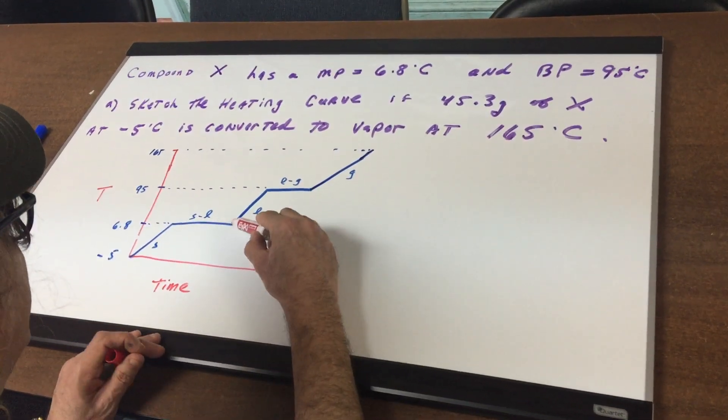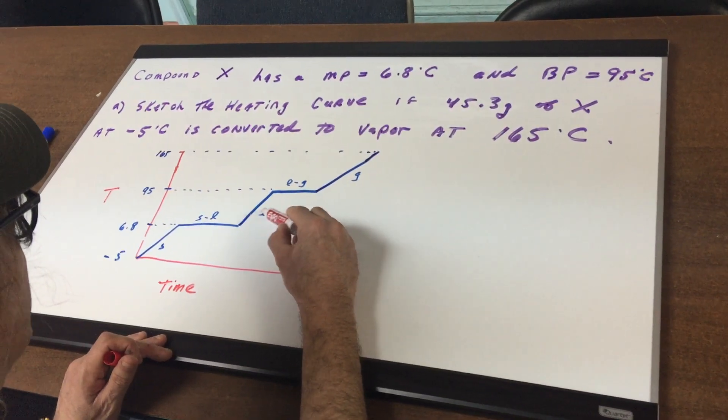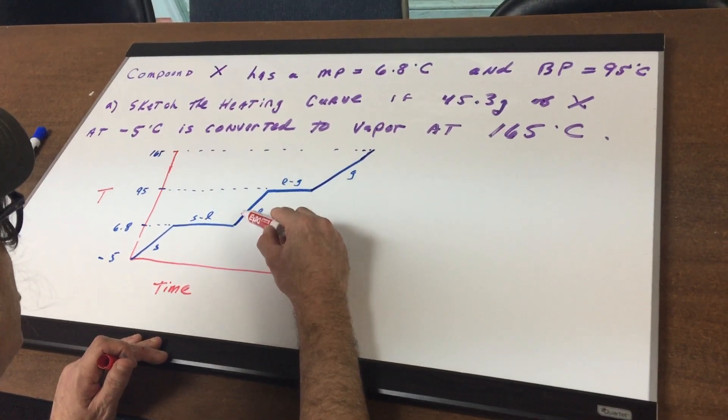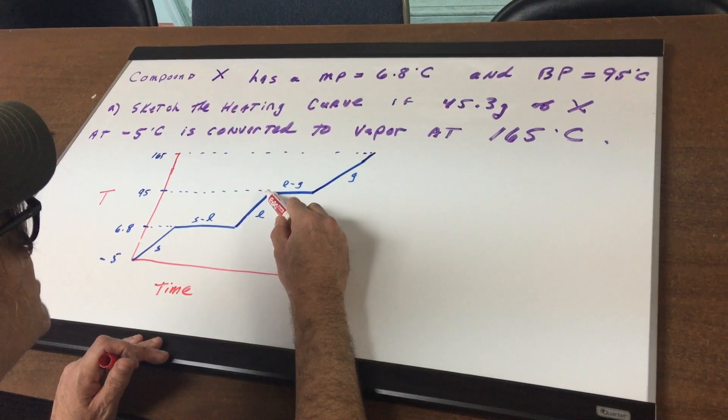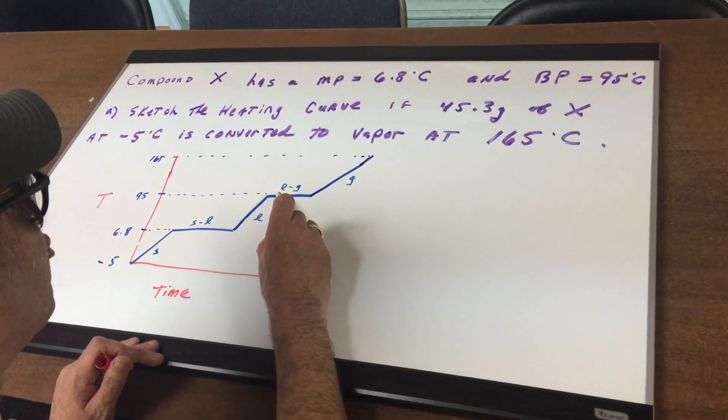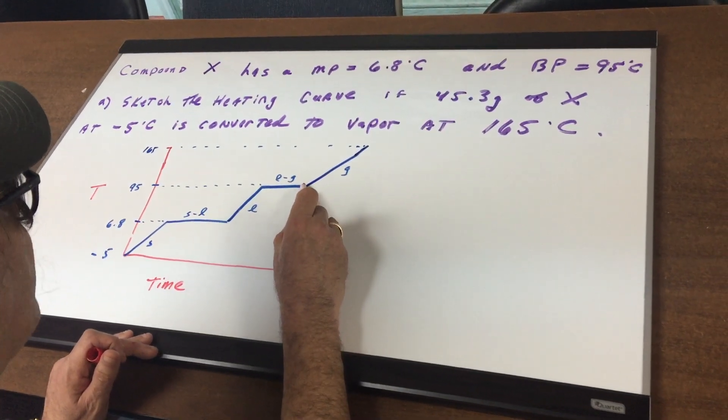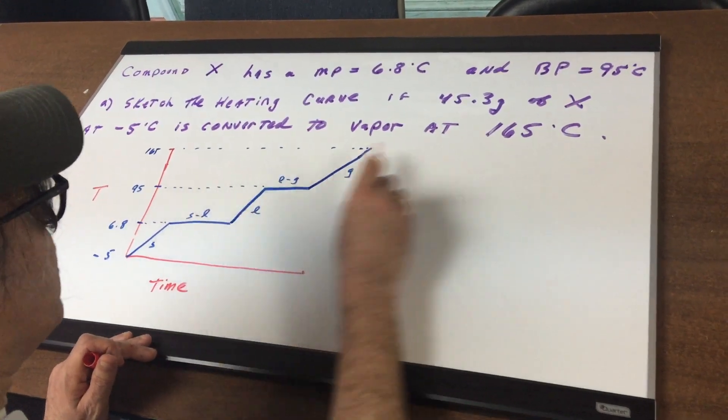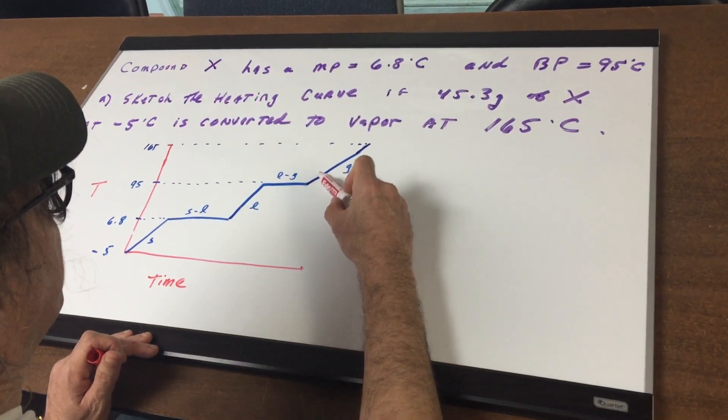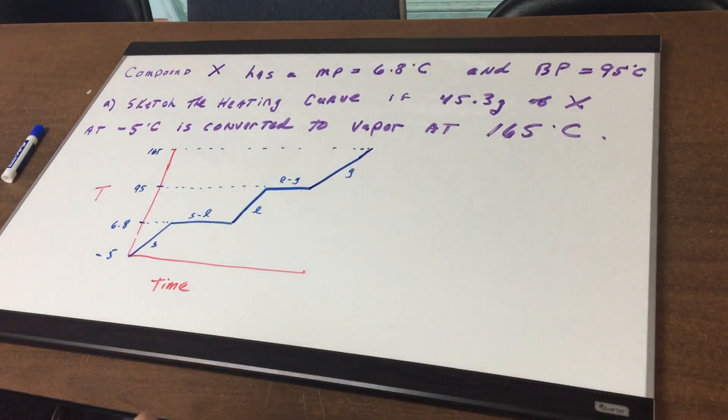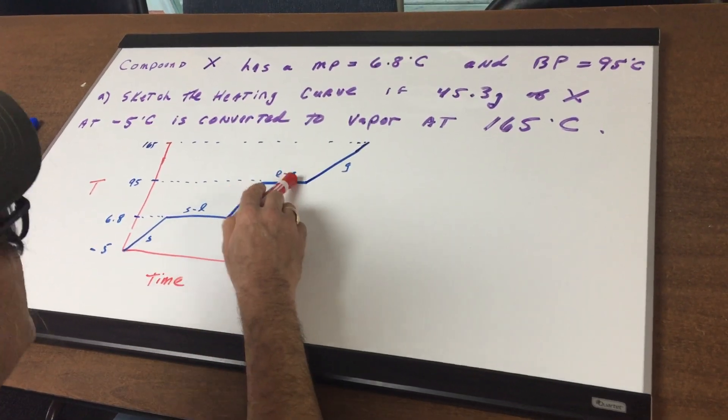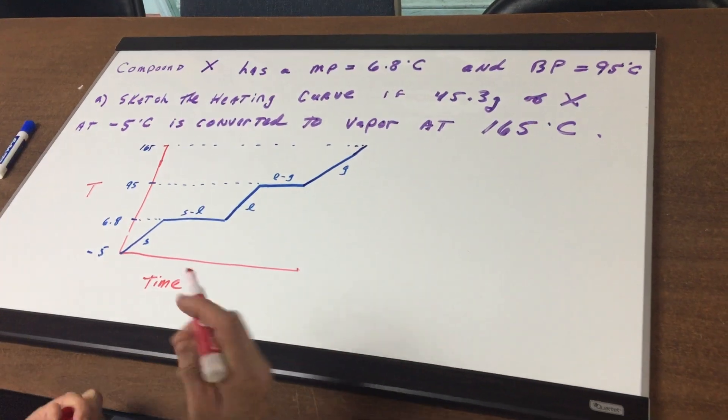Once we do this we're then going to continue to heat it up and now it's in the liquid phase before it was solid. We're going to go all the way up to 95 degrees and then we learn that that's the boiling point. So once again it's at a phase change levels off and then we're going to go all the way up to 165. So we've gone from solid then solid to liquid then liquid to gas and we brought it into the vapor phase.